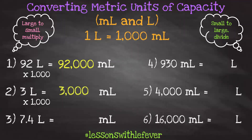Next, 7 and 4 tenths liters is equivalent to how many milliliters? I know what you're thinking — what am I supposed to do with this decimal? Remember, we're multiplying powers of 10. Since 10 to the third power is equivalent to 1,000, and there are three zeros in 1,000, that exponent tells us we need to move our decimal point three times to the right because our number should increase since we're multiplying.